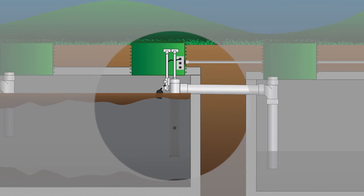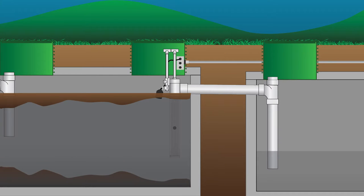The effluent filter is advantageous in many ways over just having a sanitary tee in this position, because it does filter the effluent and remove solid materials. It protects the pump and drain field from solid materials either plugging the impellers of the pump or sending solid material out to the drain field, causing the drain field to fail prematurely.